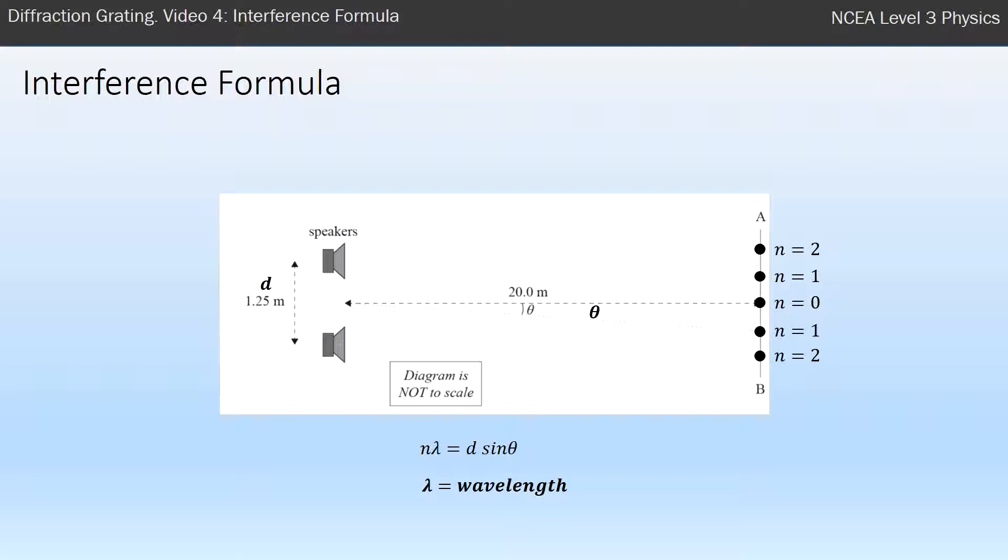And theta is just the angle that is basically between bright spots or loud spots. So it's kind of how spread out the diffraction grating is. It's a pretty straightforward formula to use.